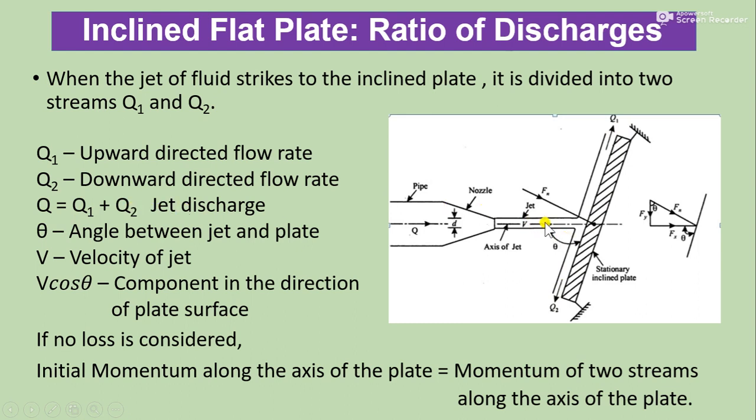Now θ is angle between jet and plate. V is velocity. The component in the direction of plate surface is V cos θ. So if no loss is considered, then we can have the relation that initial momentum along the axis of plate equals momentum of two streams along the axis of plate.